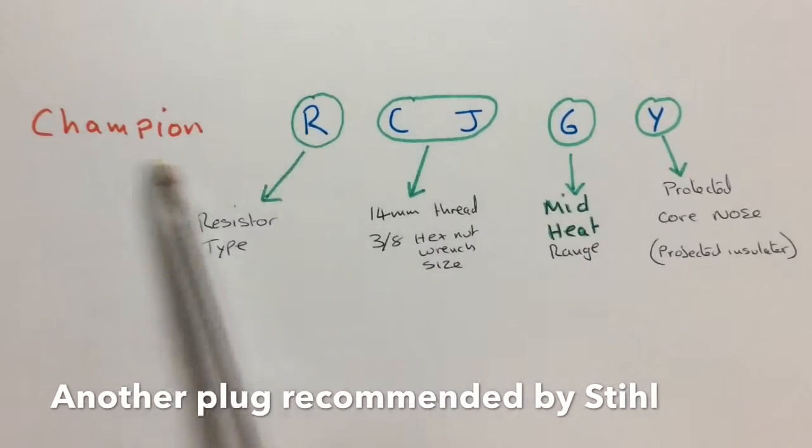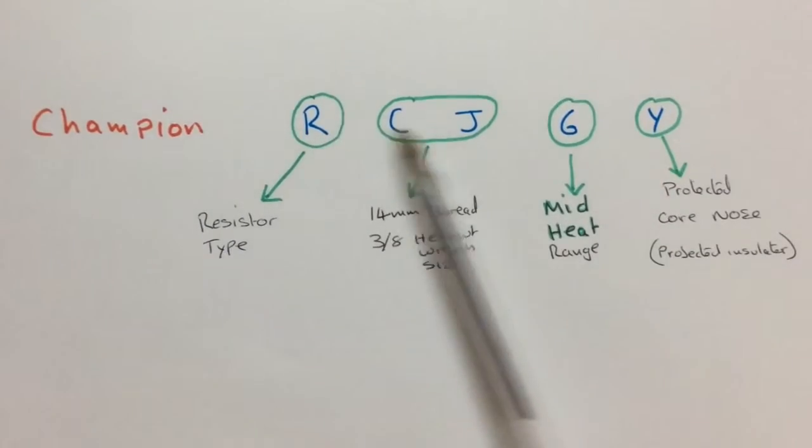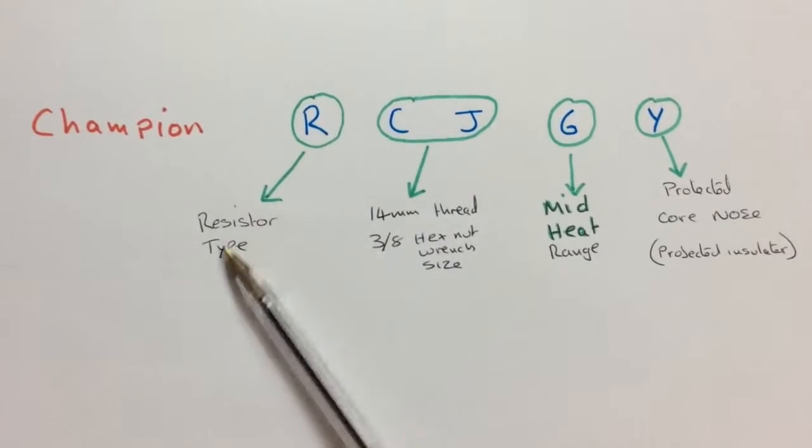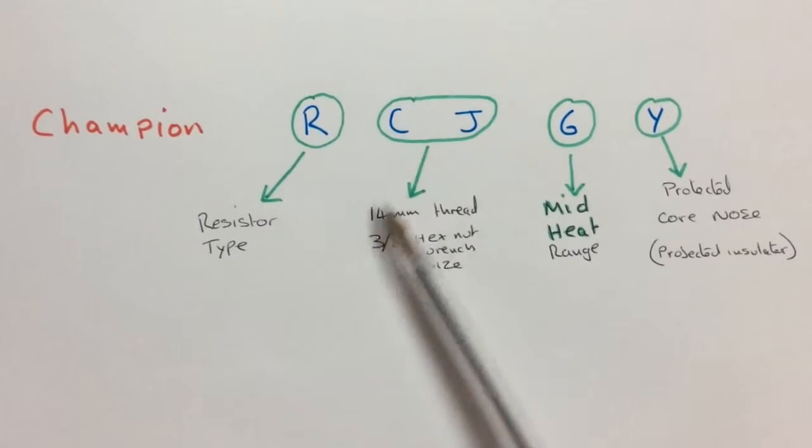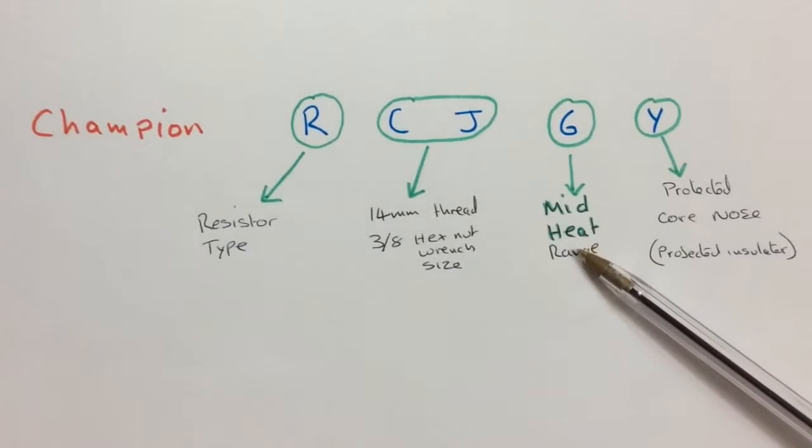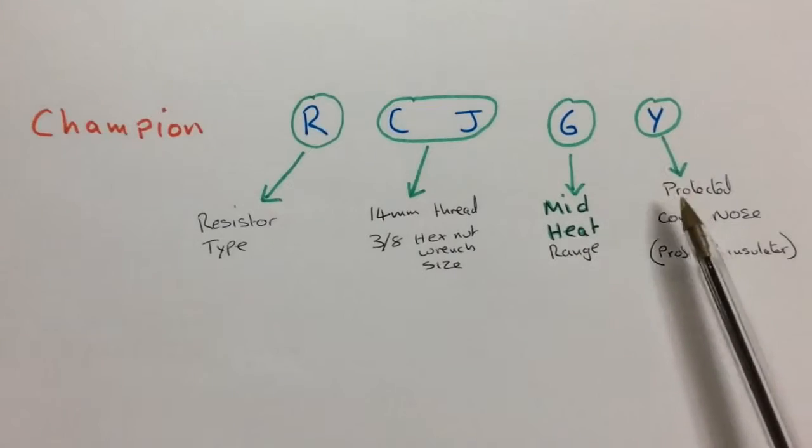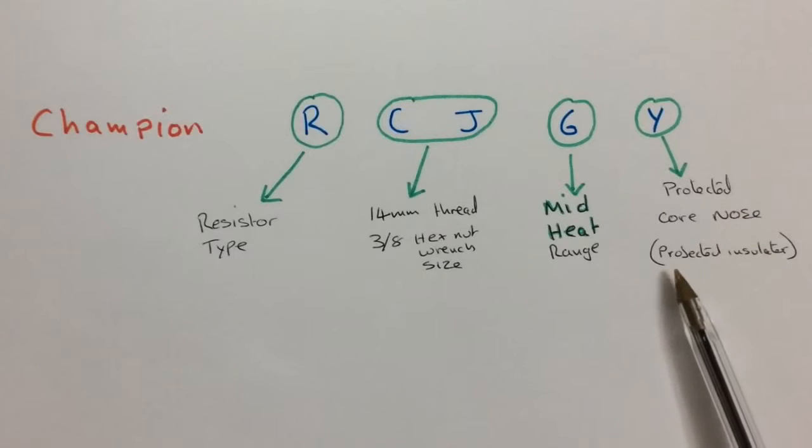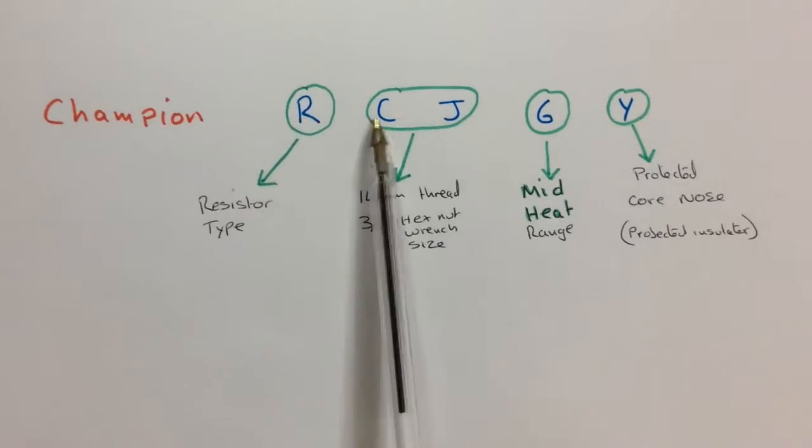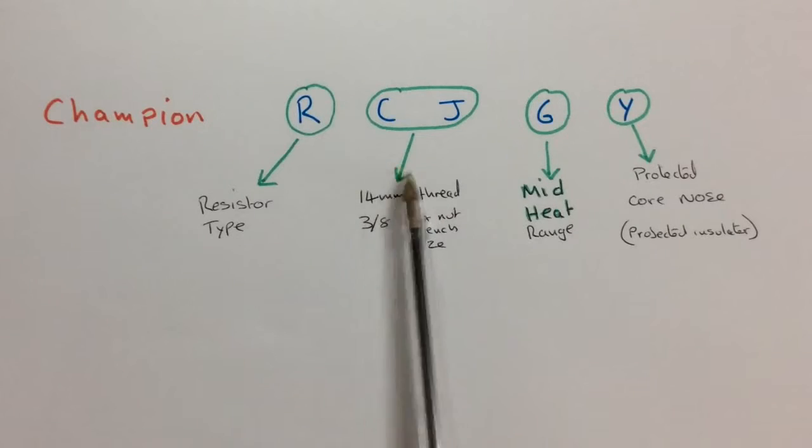Another fantastic plug to use is the Champion RCJ6Y. When we look at the codes, we see the similarities to our other plugs. The R there means resistor type. The CJ means 14mm thread. The 6 meaning a mid-range heat, just like the others. And the Y refers to a protected core nose. That basically means the projected insulator. So the Champion RCJ6Y, brilliant plug. Also recommended by Still.